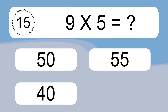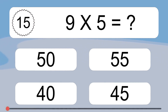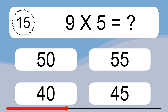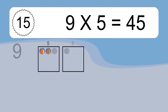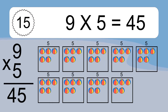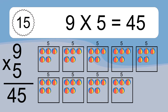9 x 5 equals what? 9 x 5 equals 45. We have 9 boxes, and each box has 5 colorful balls inside. If you count all the balls in all the boxes together, you will have 9 x 5 balls. This equals 45 balls.